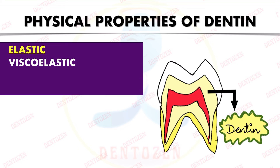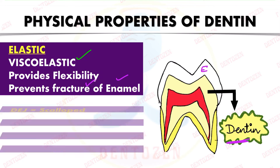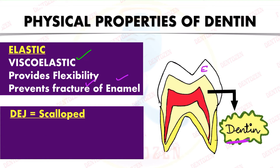A special property of dentine is elasticity — dentine is a viscoelastic tissue. This flexibility supports the enamel and prevents its fracture. The dentino-enamel junction (DEJ) must therefore be a strong junction; it is scalloped, meaning it has a curved shape to provide firm attachment of enamel to dentine.